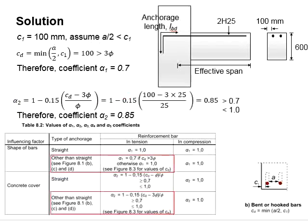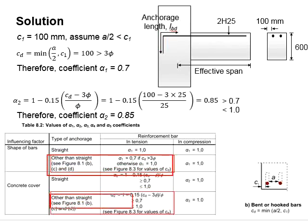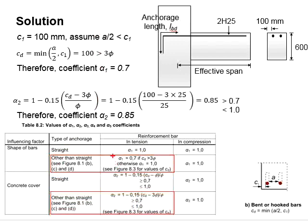Next, we need to determine the coefficients α1 to α5. Referring to Table 8.2, the α1 to α5 coefficients are given. Since the reinforcement bars are in tension, we refer to the tension column. The steel bars are bent, so we refer to the corresponding rows for α1 and α2.